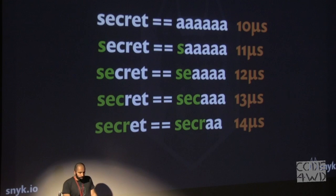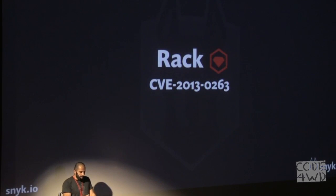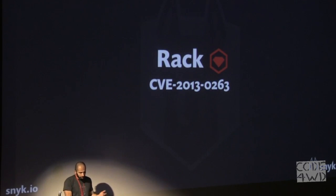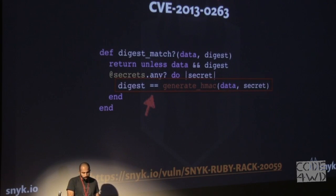That lets the attacker reveal the token one character at a time, instead of trying all possible combinations. Such a vulnerability was actually found in Rack, one of the gems of Rails, and it allowed a remote attacker to guess the session cookie and gain remote code execution.